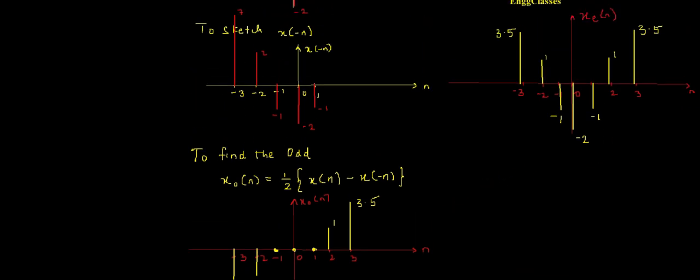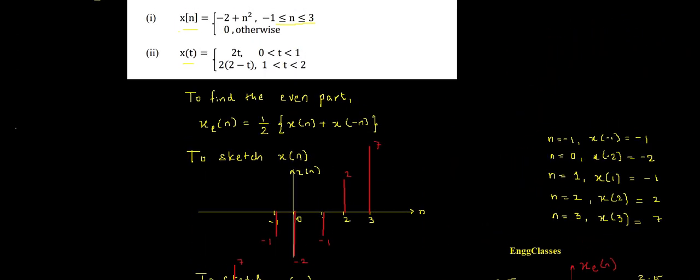This is how the even part xe(n) and the odd part xo(n) of the signal look. In the next video we will consider sketching x(t) and its even and odd parts. Till then, thank you very much.